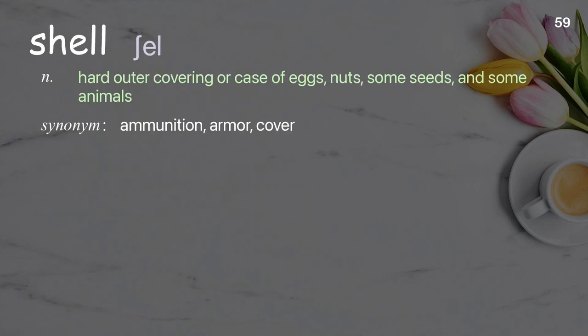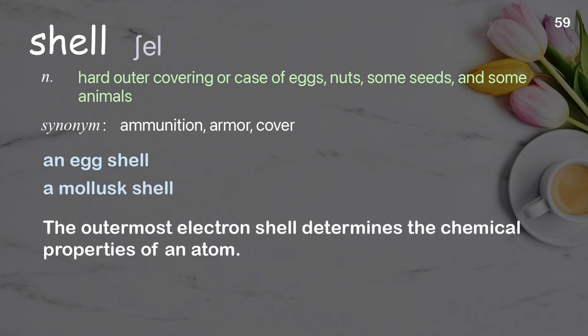Shell. Hard outer covering or case of eggs, nuts, some seeds, and some animals. Examples: an egg shell, a mollusk shell. The outermost electron shell determines the chemical properties of an atom.